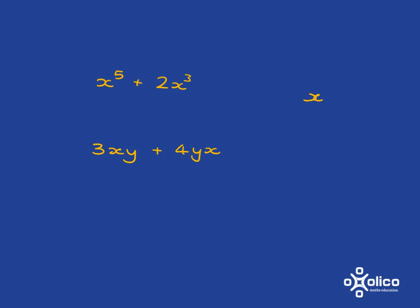So x times y is the same as y times x, and so xy, which is x times y, is the same as y times x, and so these two are in fact like terms, because this is just 4xy, and so in total you've got 7xy.